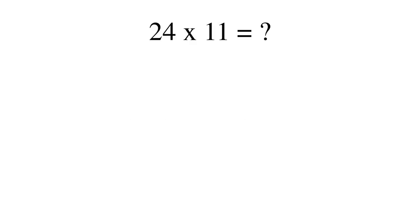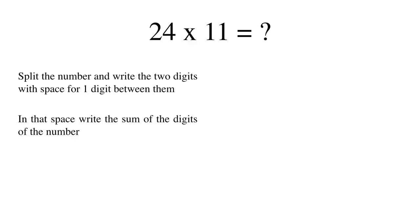Here's the trick. Say we had to multiply 24 by 11. There are just two easy steps. We split the number and write the two digits with space for one digit between them. In that space we write the sum of the two digits of the number.